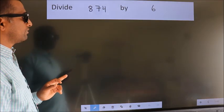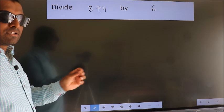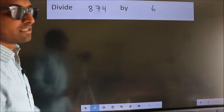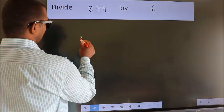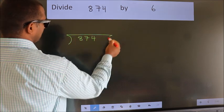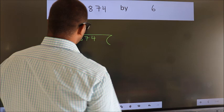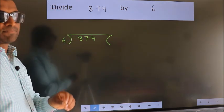Divide 874 by 6. To do this division, we should frame it in this way. 874 here, 6 here. This is your step 1.